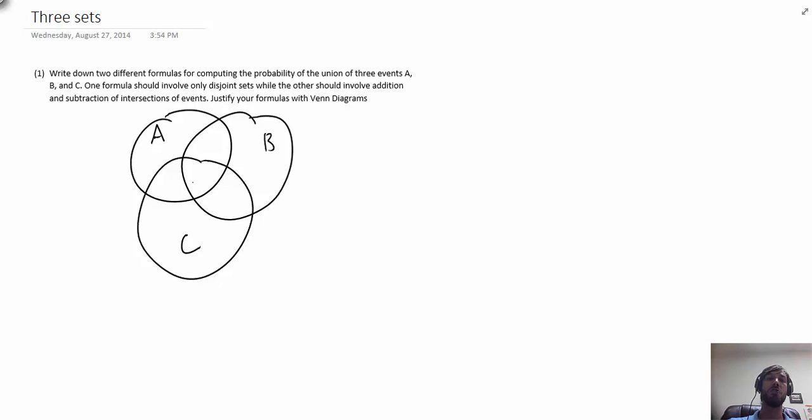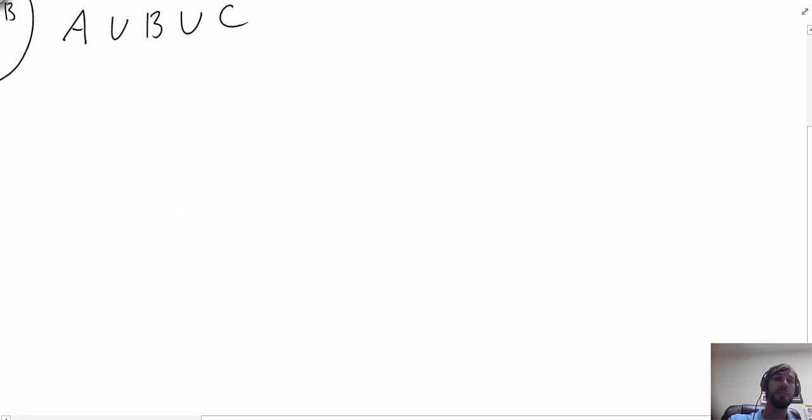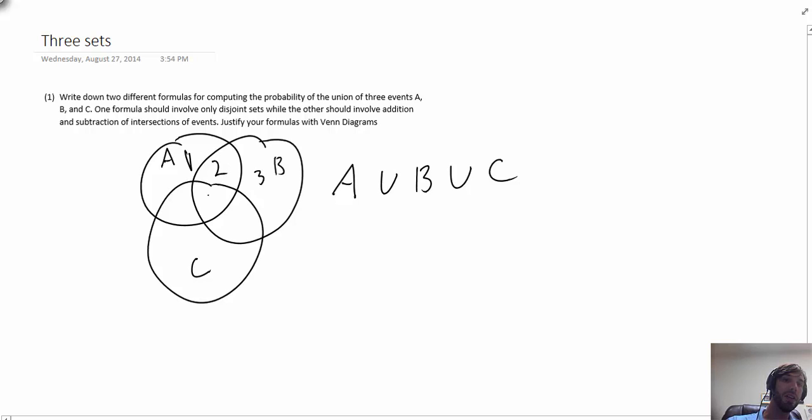Here I have drawn a Venn diagram of the union of three sets A, B, and C. In set theoretic notation we can denote this by A union B union C. To break that up into disjoint sets, we want to think of this Venn diagram as consisting of seven regions.